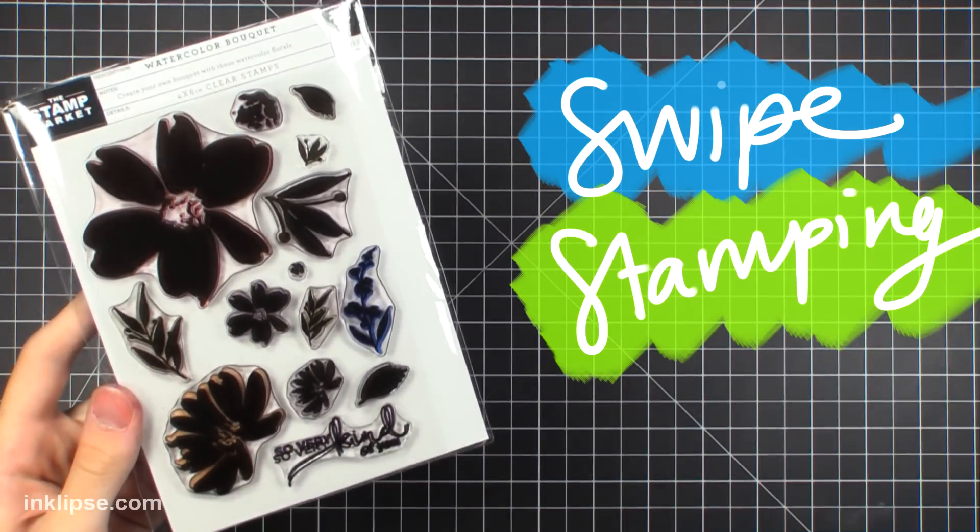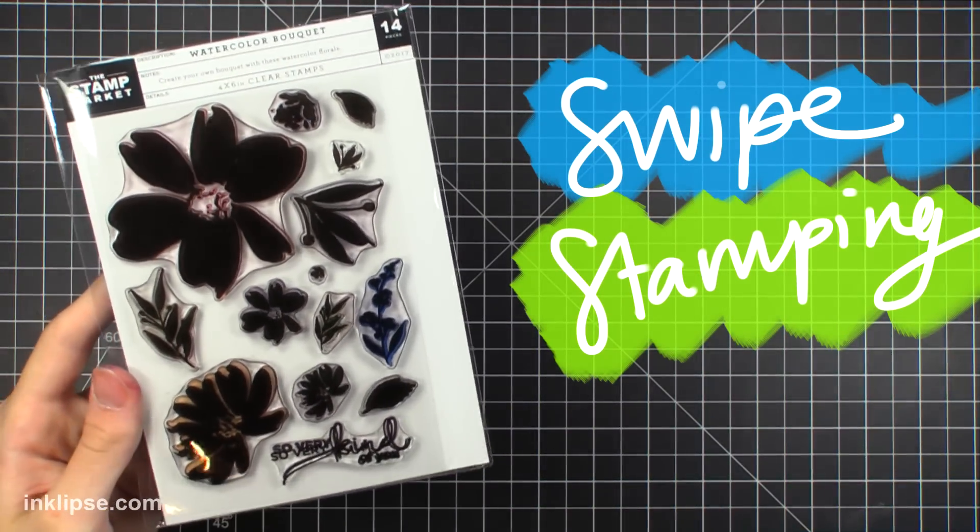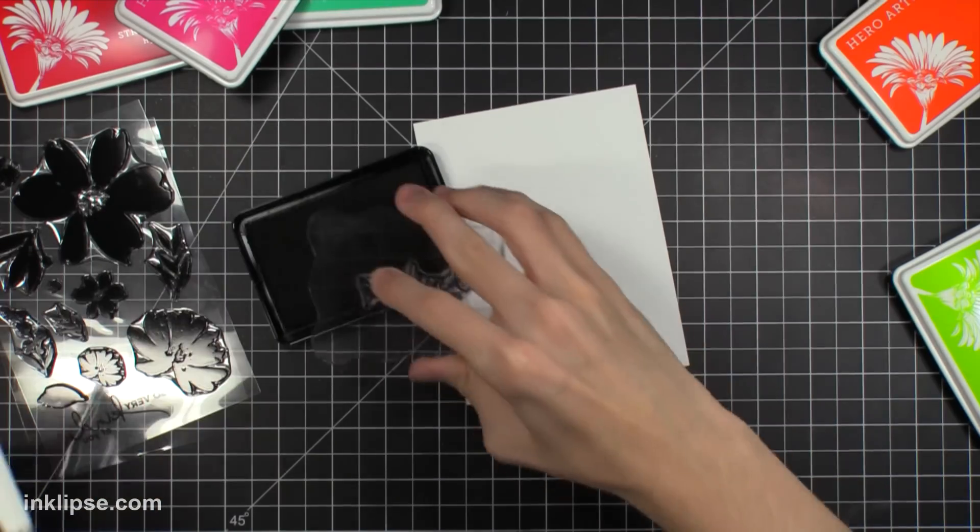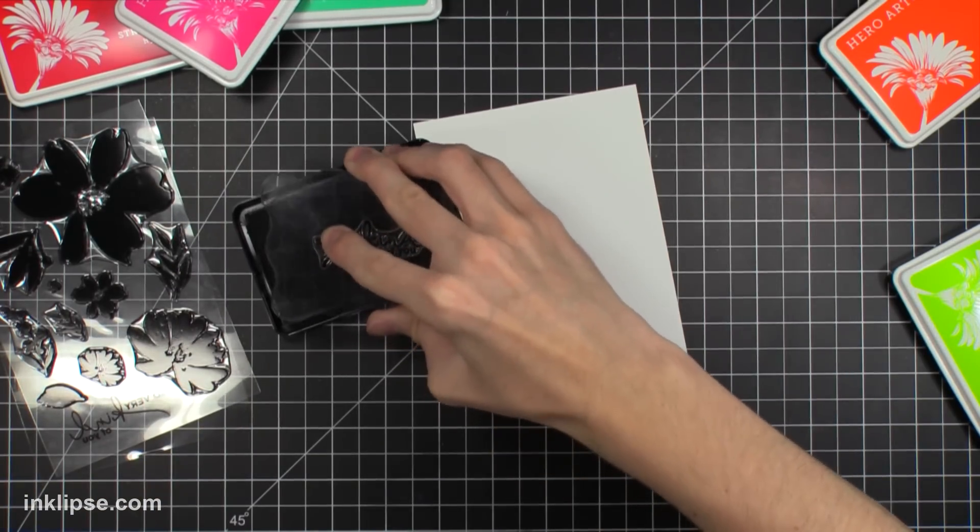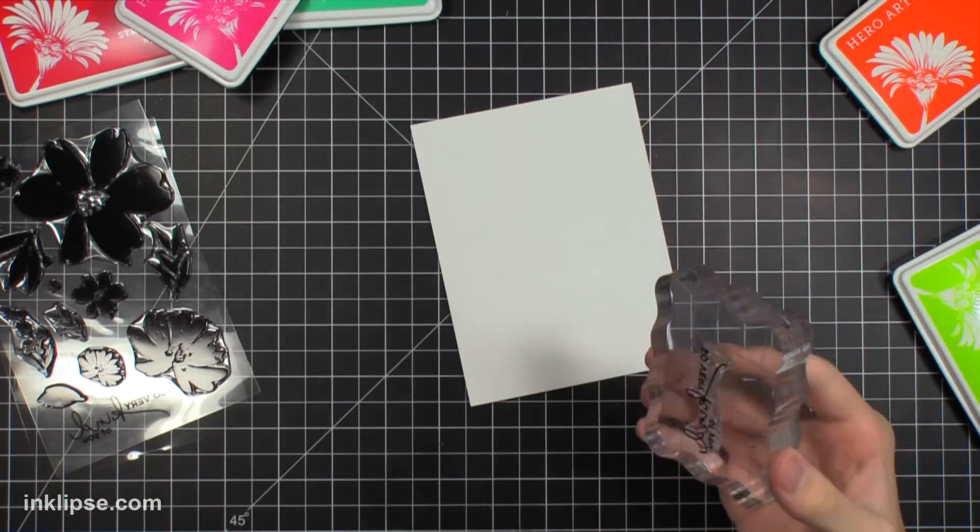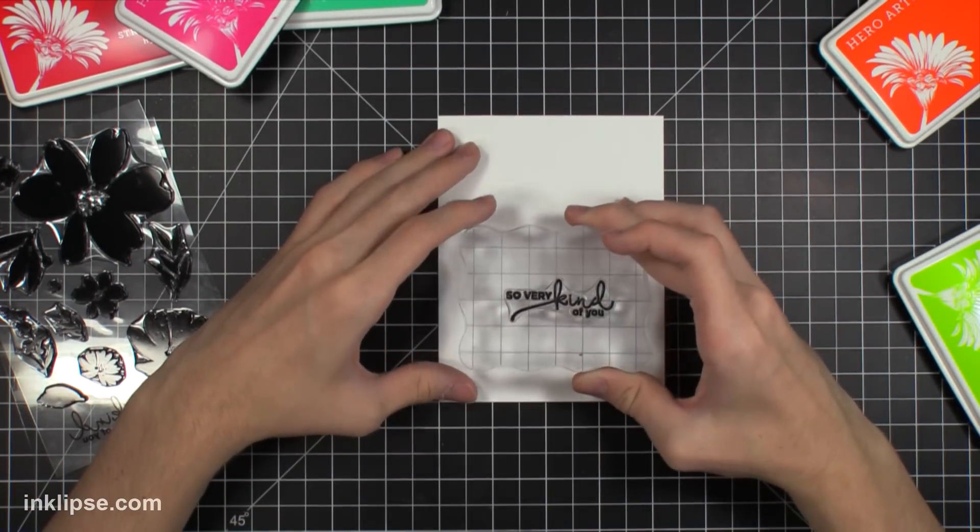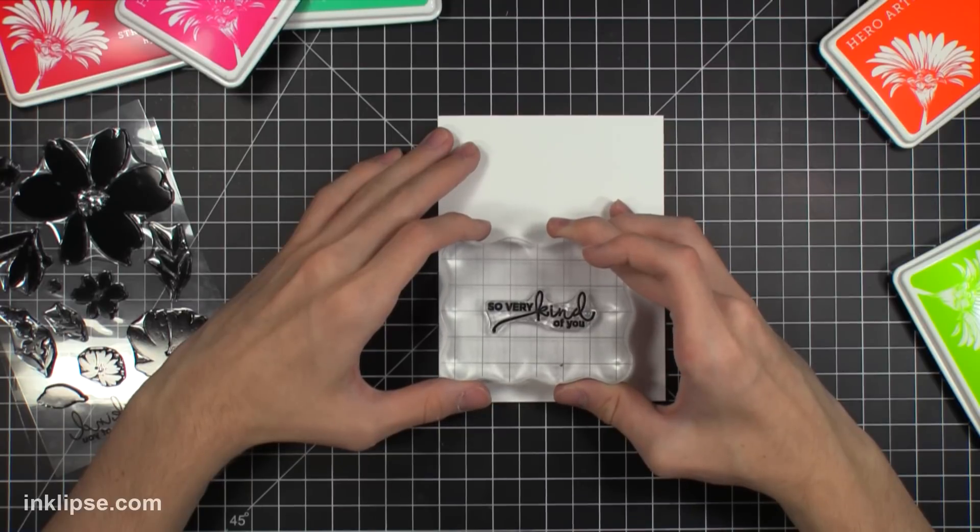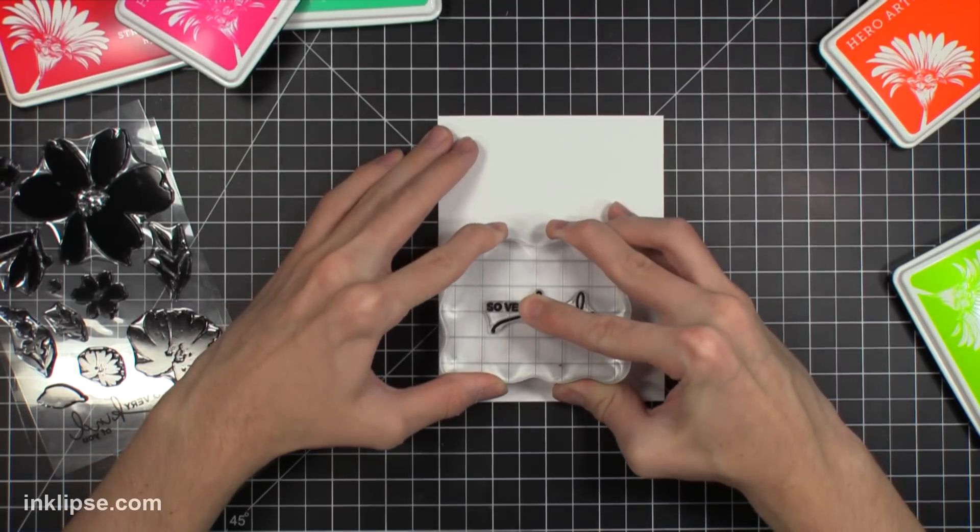This next technique is called swipe stamping. I actually learned it from Jennifer McGuire but it gives a little bit of extra texture to all your solid stamped images. So I'm just going to start off by stamping down my sentiment in kind of the lower center area of my card. This just ensures that I won't have to put it on foam tape later on and it's already there so I can stamp right around it.